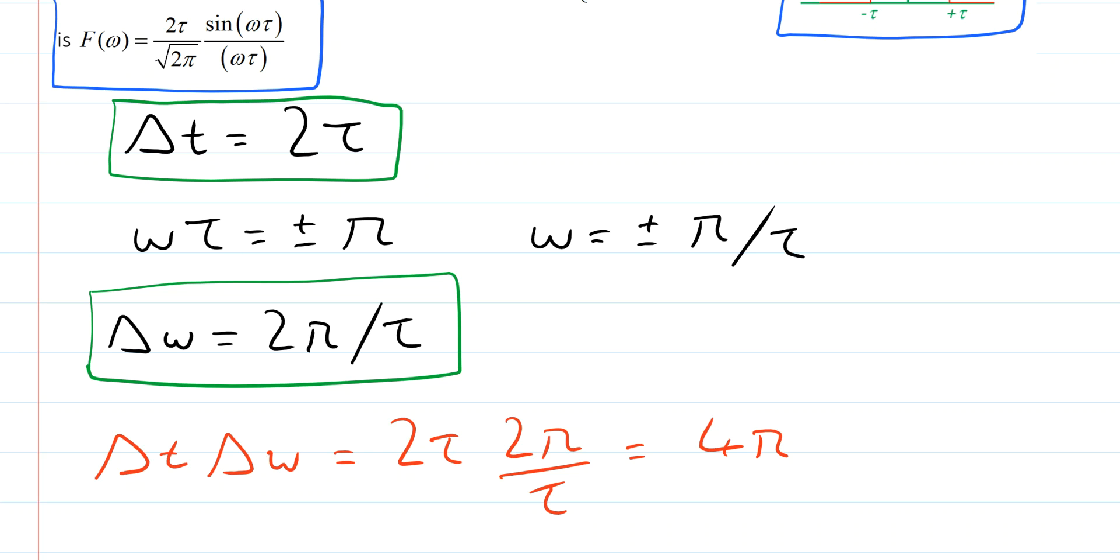So we've shown that for the top hat function, the width of the original function is inversely proportional to the width of the Fourier transform. And as we'll see, this is a general property of Fourier transforms.